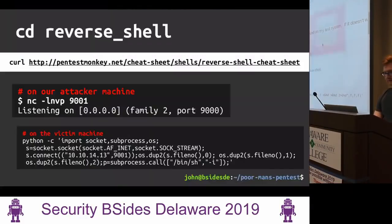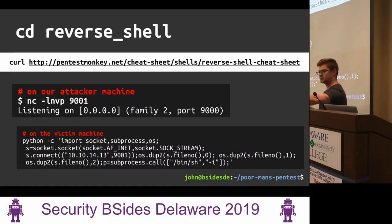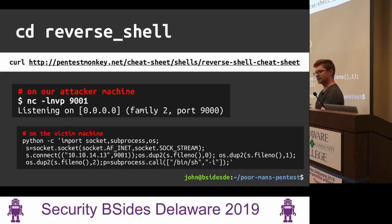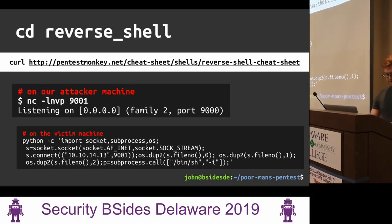Have you guys seen the Pentest Monkey reverse shell cheat sheet? It's an awesome resource. If you just Google 'reverse shell cheat sheet' you can pull it up. The syntax for different languages to get that reverse shell callback varies depending on whether you're in Bash, Perl, Python, Ruby, or whatever. But this cheat sheet gives you small, super-simple, compressed one-liners you can just copy and paste and slap right in there.